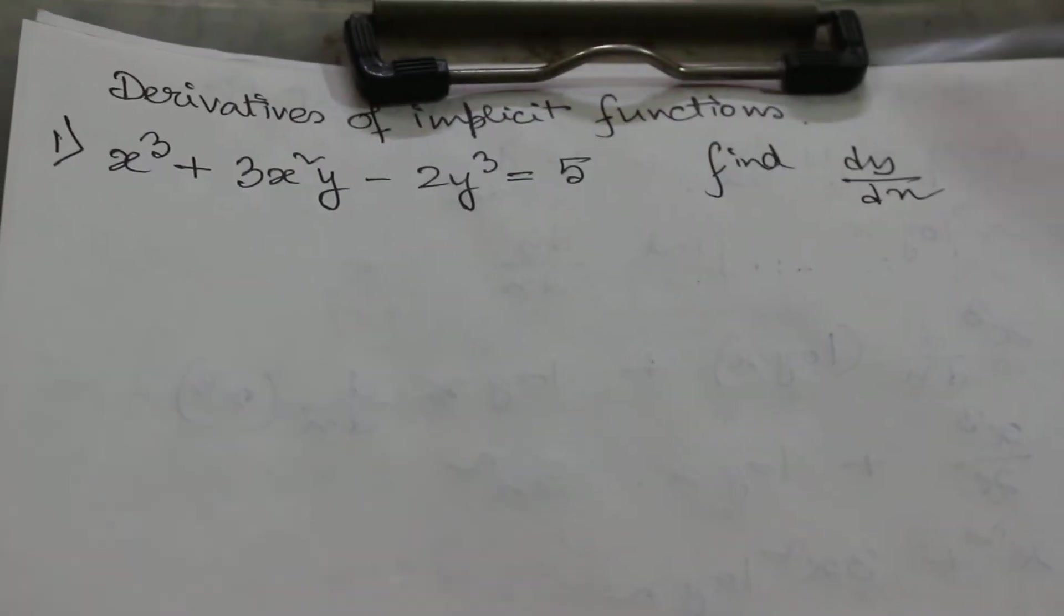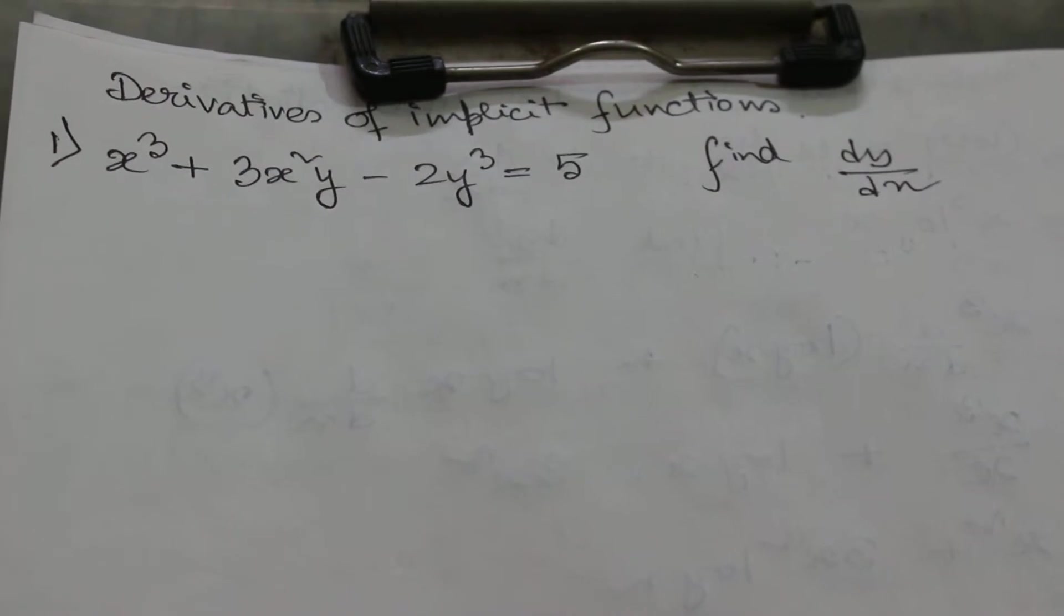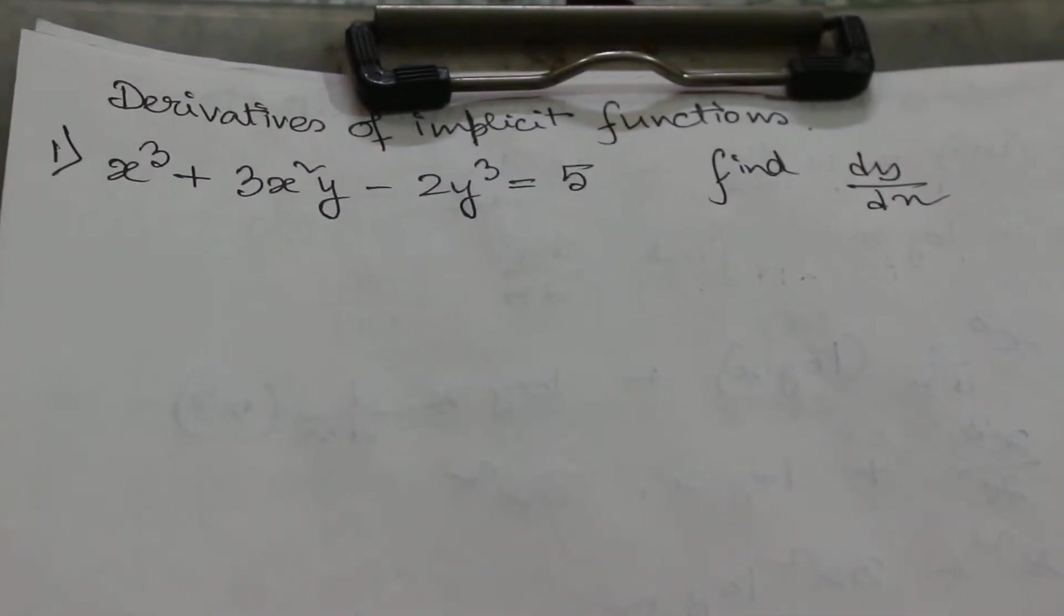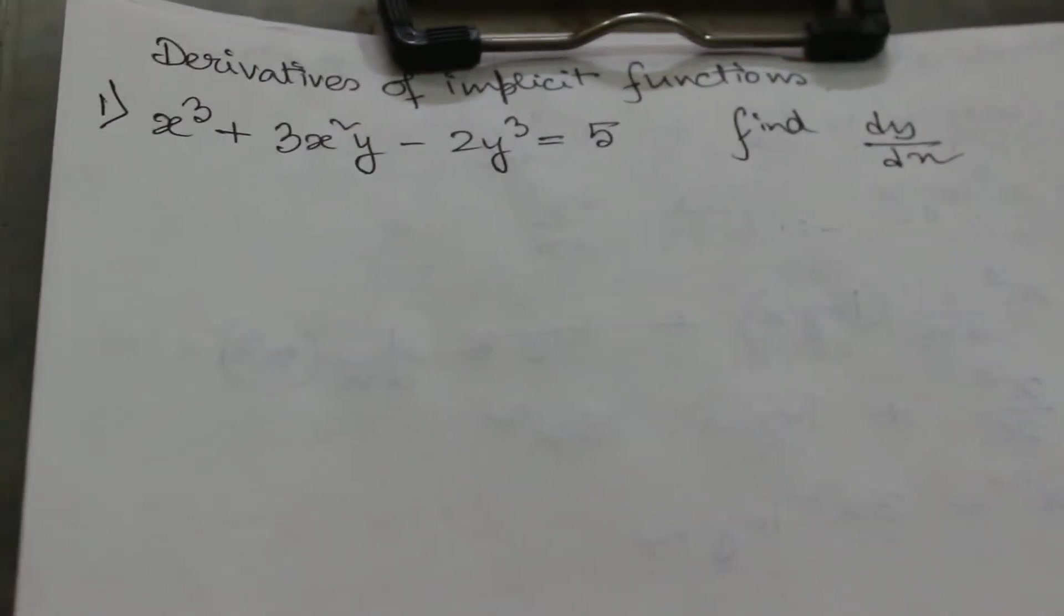So the first equation is x³ + 3x²y - 2y³ = 5. You can see that in this equation there are both x and y together. So we have to calculate dy/dx.